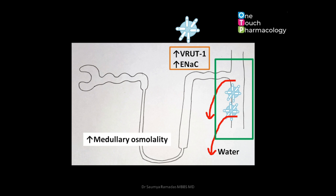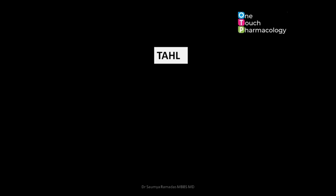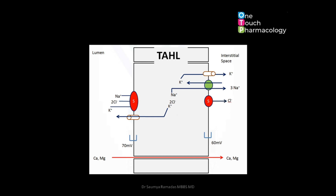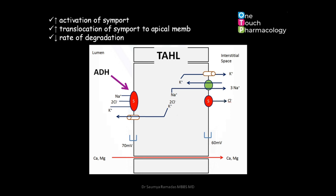Both these actions greatly enhance the medullary osmolality, which in turn increases water absorption of the collecting duct. Another site of action of vasopressin is the thick ascending limb of the loop of Henle, where vasopressin acts by activating the sodium-2-chloride-potassium symporter. This also increases medullary hyperosmolality and the corticomedullary osmotic gradient. The actions on the collecting duct and the thick ascending limb are via V2 receptors.